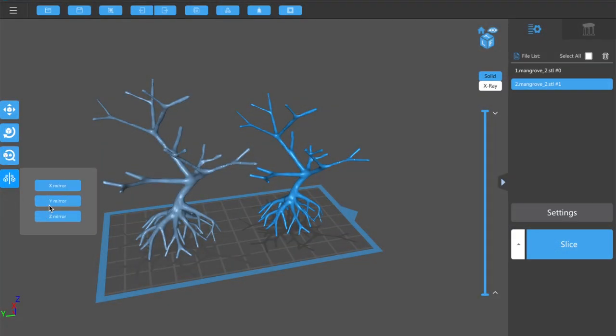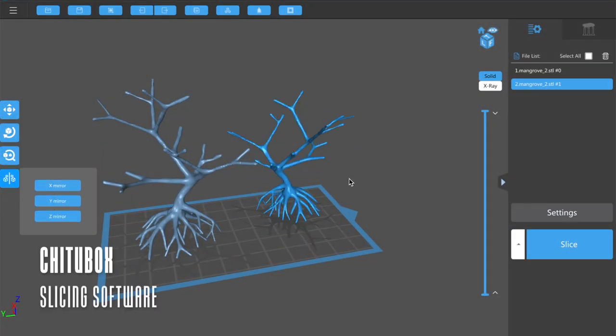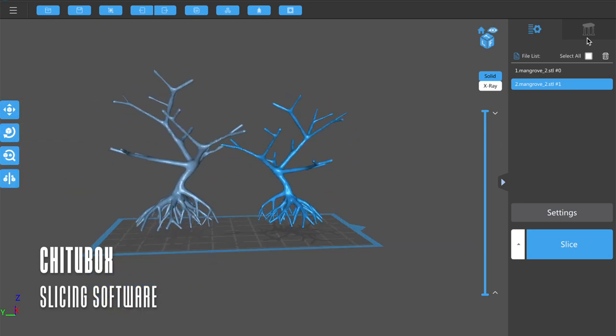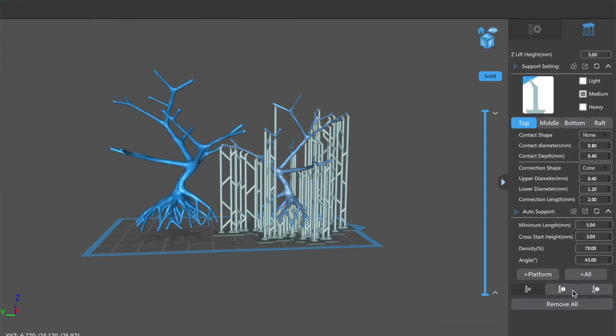To prepare the tree for printing, I opened it in a slicing software. This program tells the printer exactly how to print the tree. It also adds any necessary supports to make sure that the print is successful.